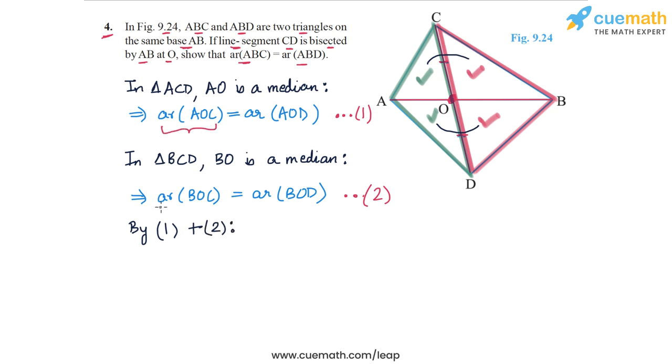On the LHS, we will get area of AOC plus area of BOC. AOC plus BOC gives us ABC. Let me highlight that AOC plus BOC gives us this triangle ABC.